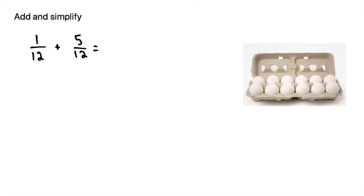We have a homework problem that is adding fractions and then simplifying. The general rule is if your denominators are the same — like here we have 12 and 12 as our denominators — we can add the numerators, which are the top numbers. 1 plus 5 is 6, and the denominator remains the same. So here we have 6 over 12 once we've added our fractions.